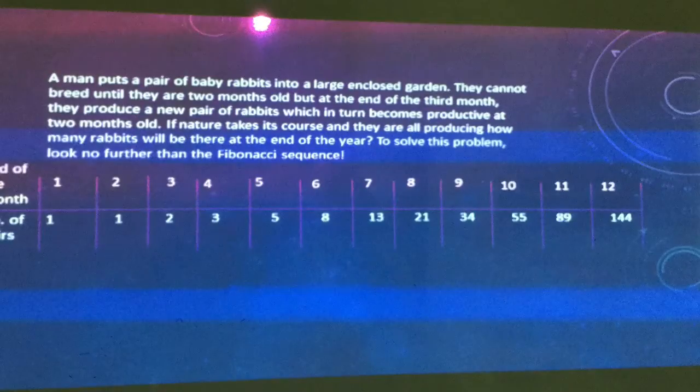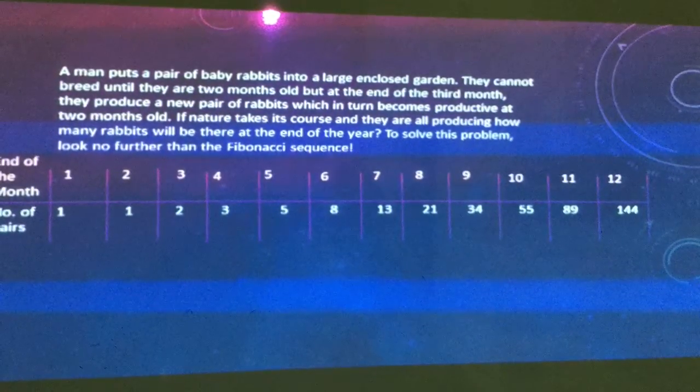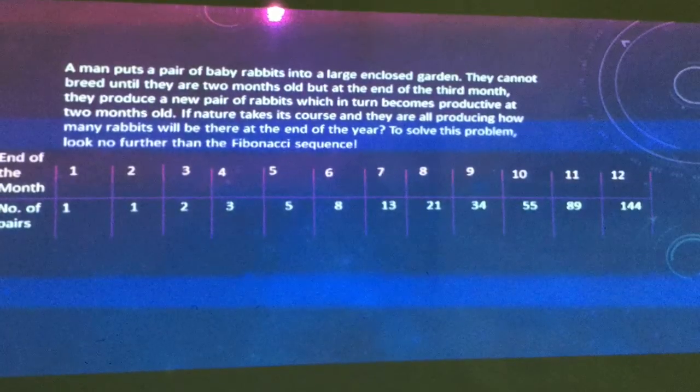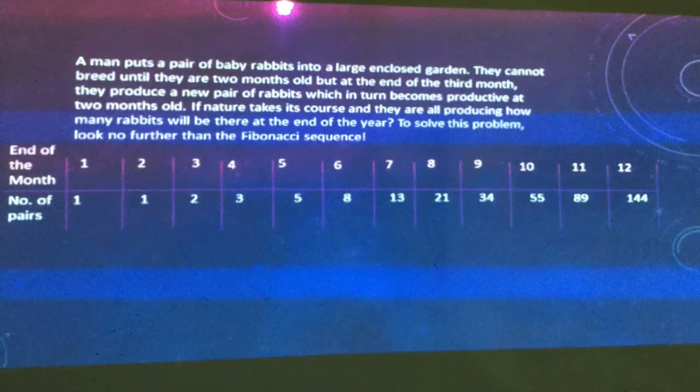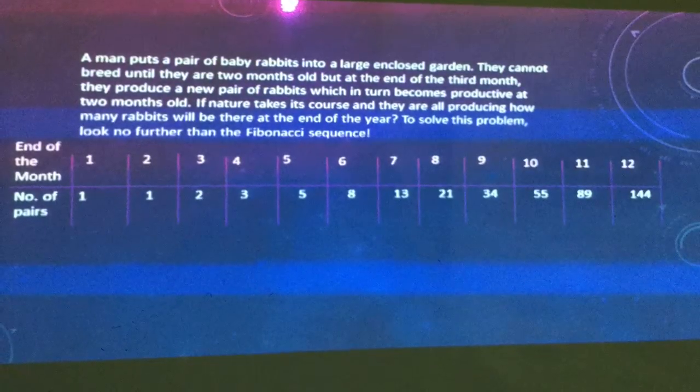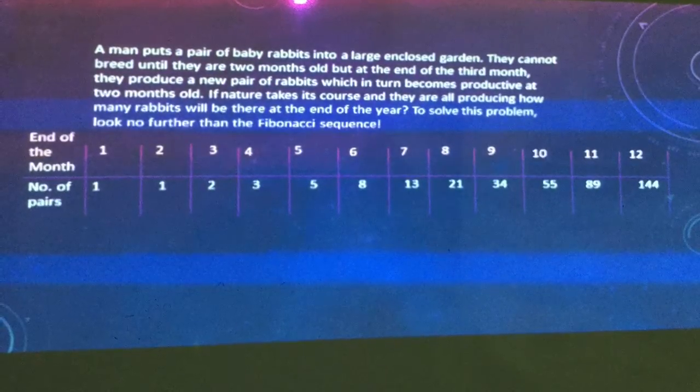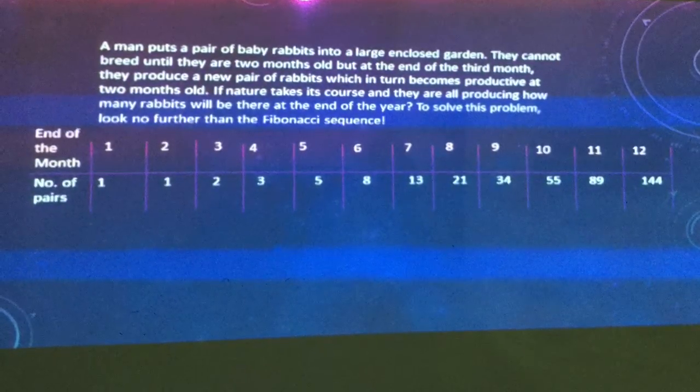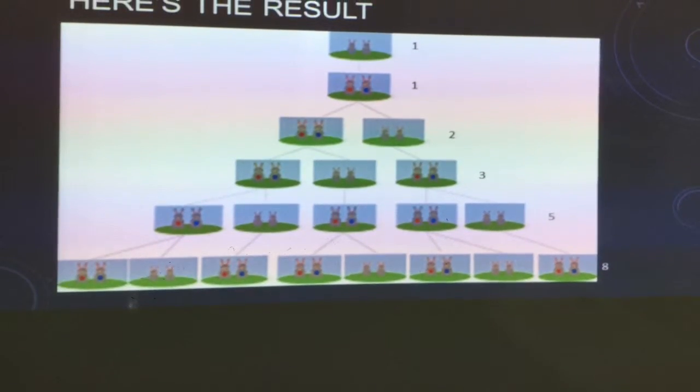A man put a pair of baby rabbits into a large enclosed garden. They cannot breed until they are two months old, but at the end of the third month, they produce a new pair of rabbits which turn to become productive at two months old. If nature takes its course and they are producing in the notorious way that rabbits do, how many rabbits will there be at the end of the year?